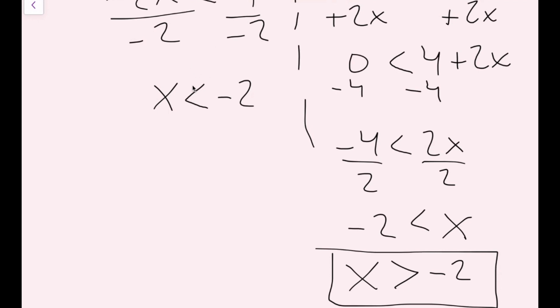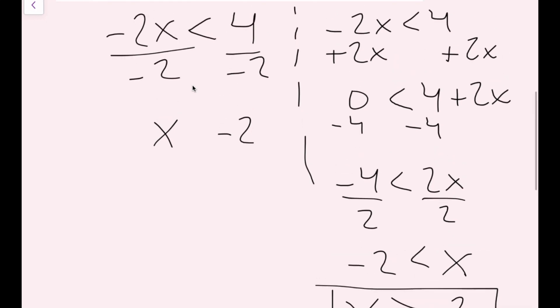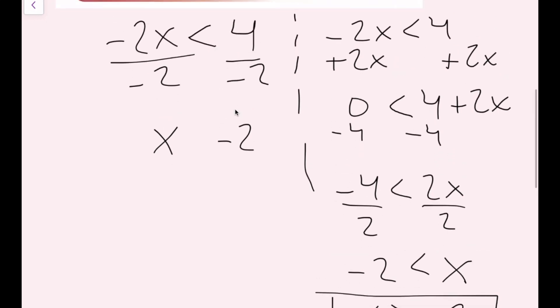So instead of leaving this as less than, whenever we divide by a negative number, we have to change the inequality symbol — we just flip it. So instead of less than, it becomes greater than. That's why that works that way.